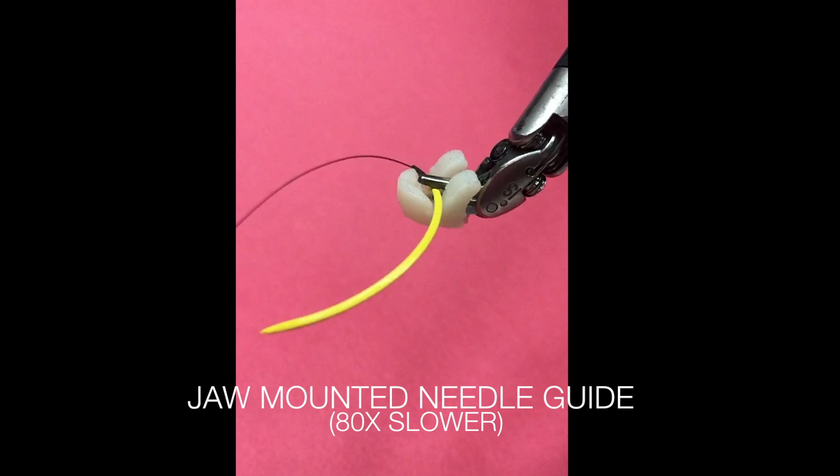We have designed a gripper jaw-mounted needle guide that passively re-orients the needle into a known position upon gripper closure as shown. We showed that a needle guide reduces needle pose uncertainty by three times as compared to a standard needle driver.